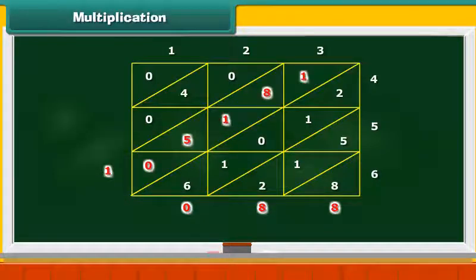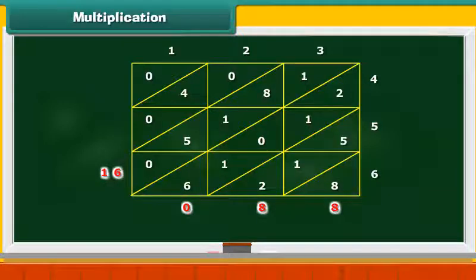It has 5 elements: 1, 8, 1, 5 and 0. Their sum is 16 including the carry over 1. Write 6 and carry over 1 to the next diagonal.